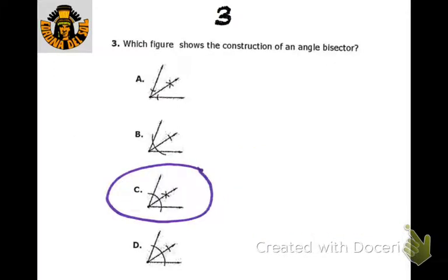We're going to practice these marks on Monday, but you put your pointy guy at the vertex of the angle, make an arc, then move your compass to where your mark is, put a mark, move it over to this one, put a mark, and then just draw it straight through. That's an angle bisector.